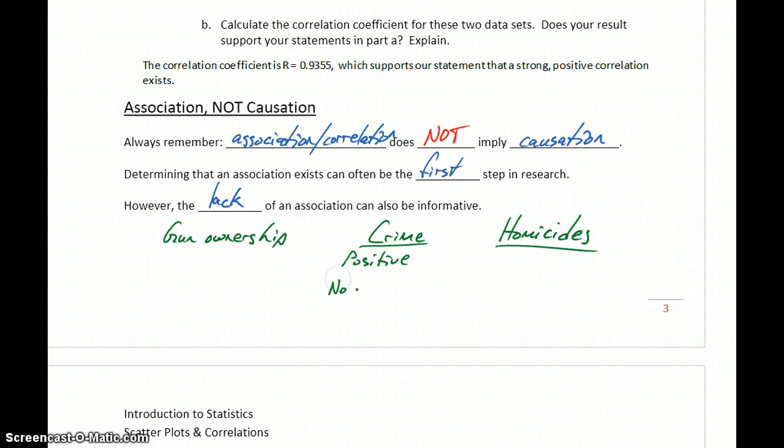If we found that there was no association, then that might suggest that gun ownership has no impact on increasing or decreasing crime. You're not necessarily safer whether or not people in your neighborhood own guns or don't own guns - that doesn't have any effect on it.